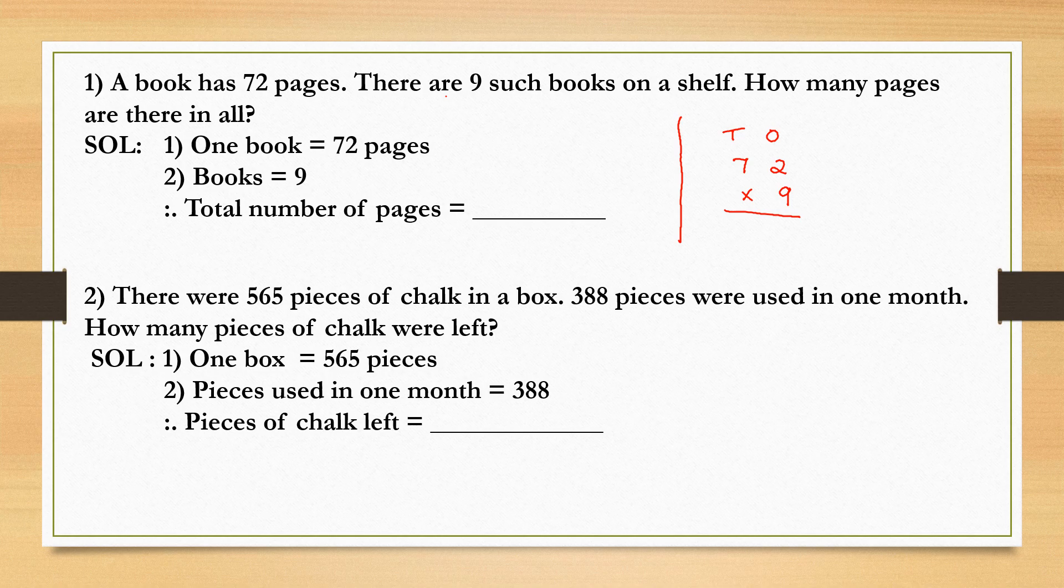So when you want to add any number repeatedly you should do the multiplication. So here 72, 9 times we need to add. Instead you can use the method of multiplication to find the answer. 72 into 9: 9 times 2 is 18. Carry 1. Write here 18.